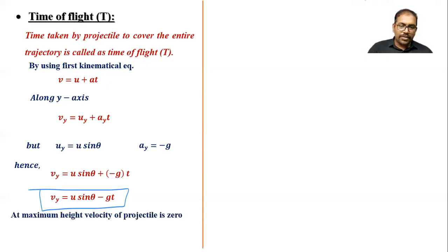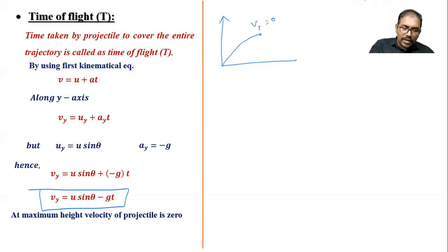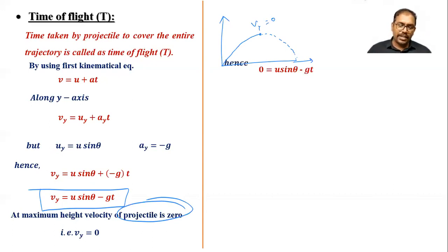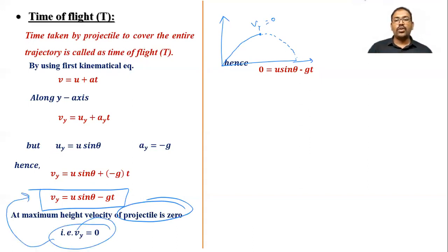At maximum height, the vertical velocity of the projectile is zero. The projectile rises to maximum height and then starts coming down. So we substitute vy = 0 into the equation, giving us: 0 = u sinθ − g·t.